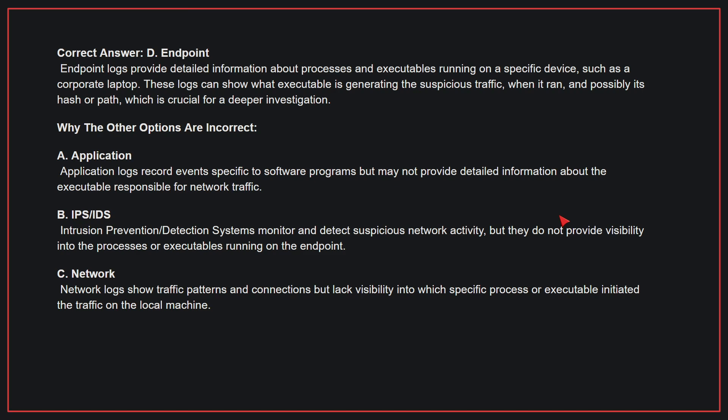Why the other options are incorrect: A. Application logs record events specific to software programs but may not provide detailed information about the executable responsible for network traffic. B. IPS/IDS monitor and detect suspicious network activity but do not provide visibility into the processes or executables running on the endpoint. C. Network logs show traffic patterns and connections but lack visibility into which specific process or executable initiated the traffic on the local machine. Therefore, the correct answer is D.